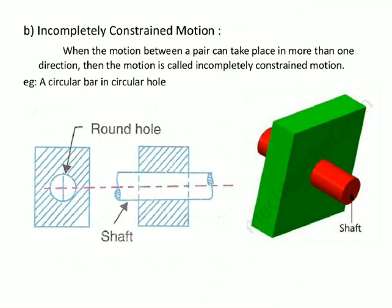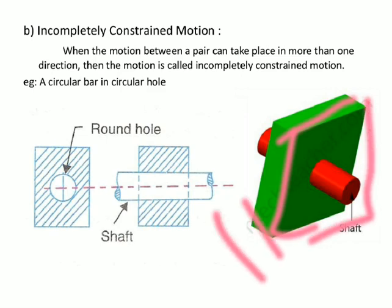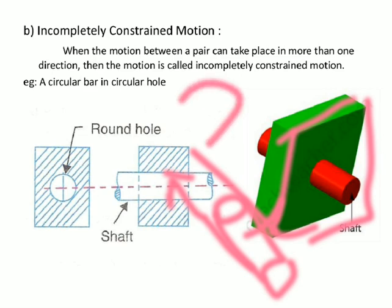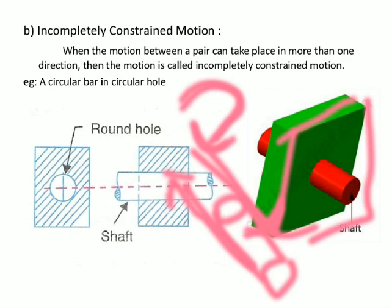Consider a circular shaft — its cross-section allows it to move forward and backward as well as rotate along its axis. That means it has more than one motion direction. If a pair can travel in more than one direction within a limited range, the motion is called incompletely constrained motion.